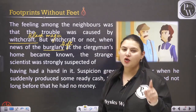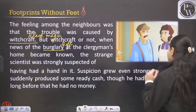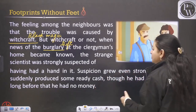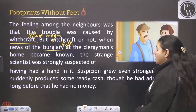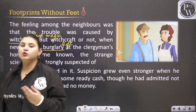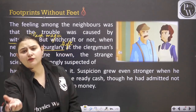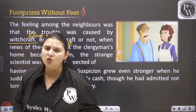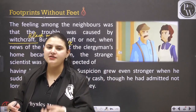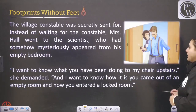Suspicion grew even stronger when he suddenly produced some ready cash, though he had admitted not long before that he had no money. He had stolen money from the clergyman's house and produced it in front of Mrs. Hall. The village constable was secretly sent for.